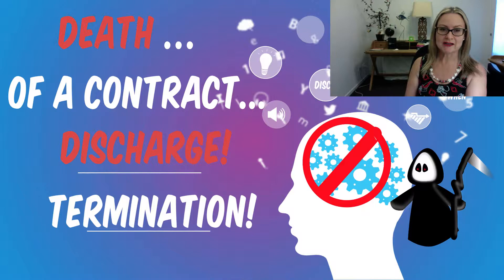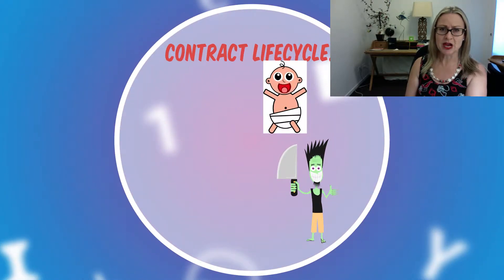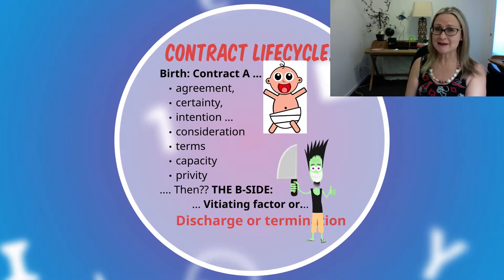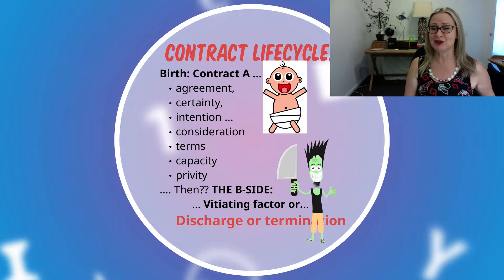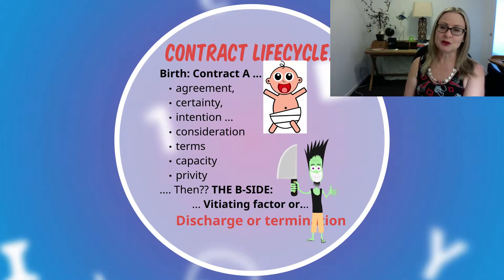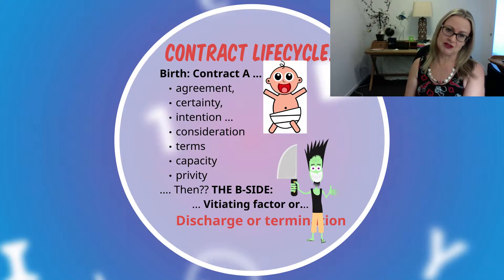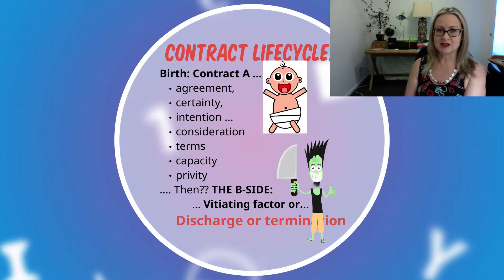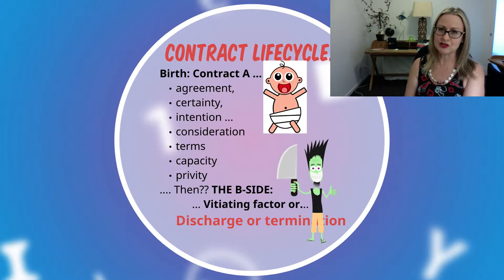Looking at the death of a contract, I want to do a bit of a recap. Looking at the contract life cycle, you've done Contract A — the fairly straightforward foundational stuff, the birth of a baby contract. We looked at all of those foundational things you need to get organized in order to have a legally binding contract: offer and acceptance, agreement, certainty, intention, consideration, all the different kinds of terms, capacity, and privity.